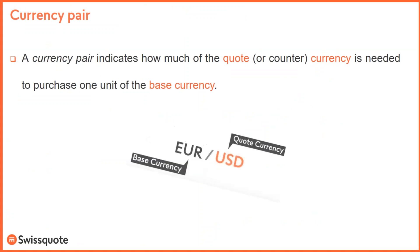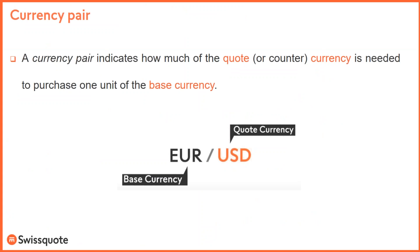What is a currency pair? A currency pair indicates how much of the quote currency is needed to purchase one unit of the base currency. For example, how many dollars are needed to buy one euro? The base currency is always one. The market price of EUR/USD is 1.18 at the moment. It means you need 1.18 of the quote currency — also called the counter currency — which is the second currency on the right.